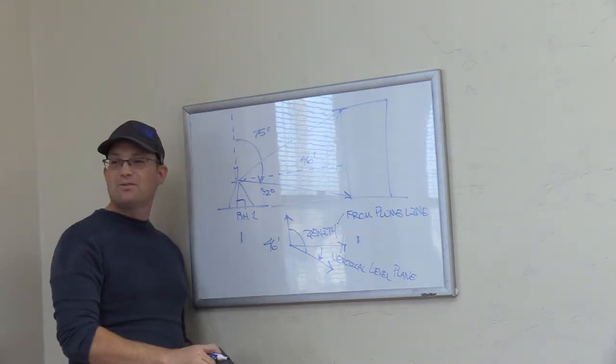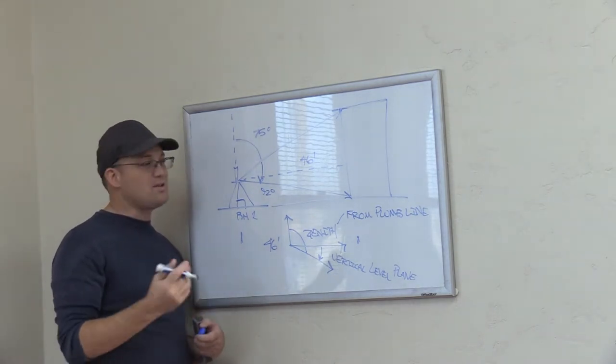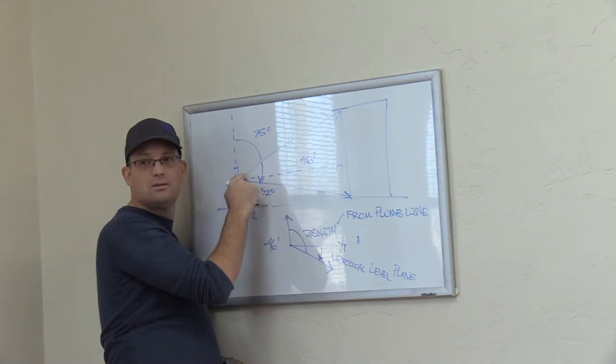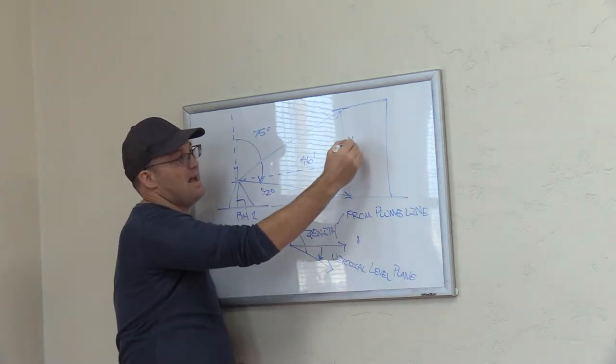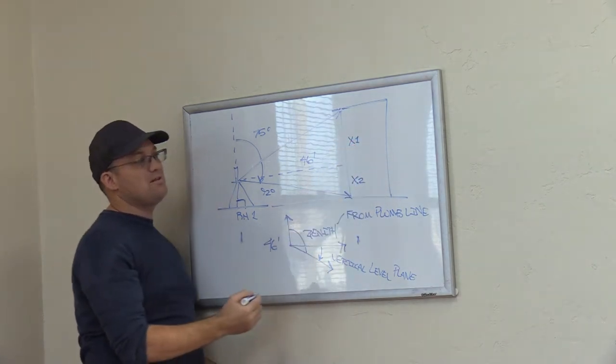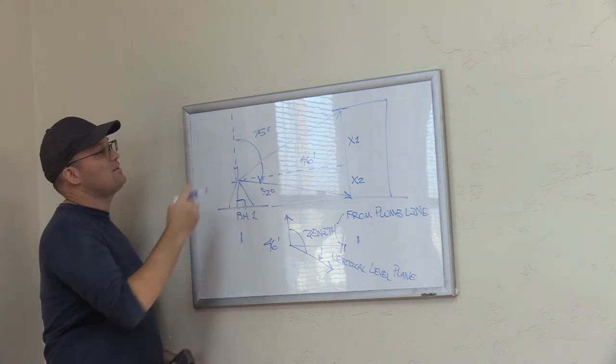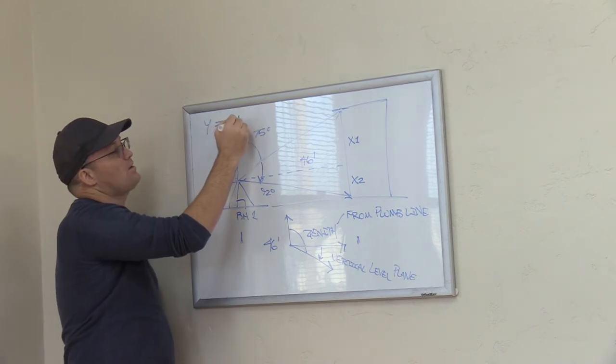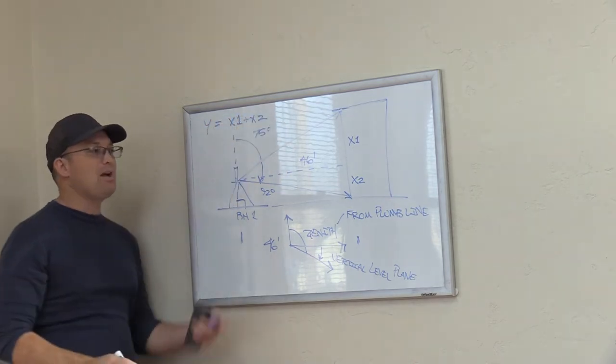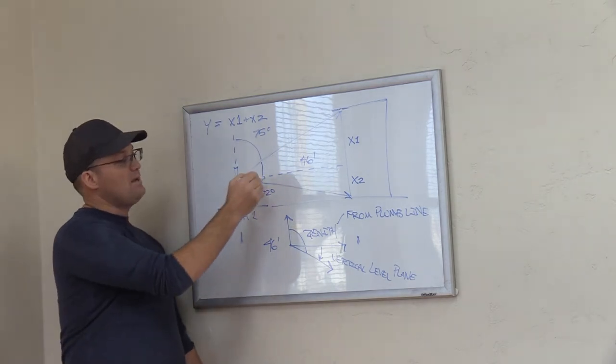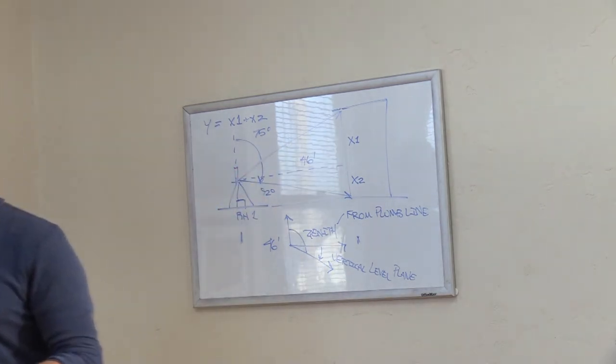Guess what? We're setting ourselves up for a right triangle trig problem here. So does everybody understand to figure out the height of the building, we've got to solve two right triangles. We've got to solve this right triangle, and we've got to solve this right triangle. That's going to give us distance X, and distance, we'll call it X2 and X1. Does everybody see the height of the building is X1? So this is why algebra becomes important, right? So if Y is the height of the building, Y equals X1 plus X2. But we've got to figure out what X1 and X2 are, right?